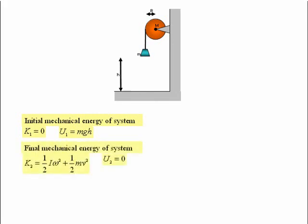The final mechanical energy: well, we have the kinetic energy, which I've called K2, that is equal to a half I omega squared plus a half mv squared, and the potential energy is just equal to zero.